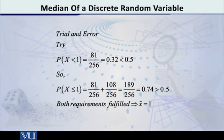So that's what I am going to do now. I am going to try small x equal to 1. Now let us apply condition number one. We want that probability of capital X less than 1 is less than or equal to half. So now what does our table say? Less than 1 means 0, and what is the probability of 0? 81 by 256, and how much is that? That is 0.32, and that is less than 0.5.